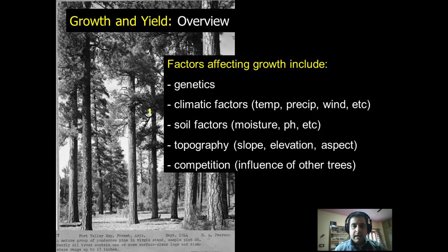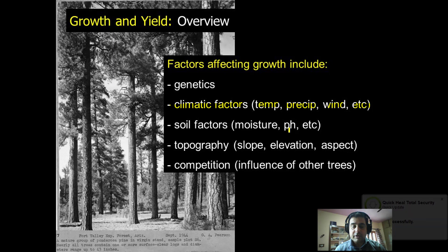There are also climatic factors which include temperature, precipitation, and wind, which affect the growth and yield of a species. High temperature corresponds to a high rate of growth, and if precipitation is good, it is also responded to by good growth.